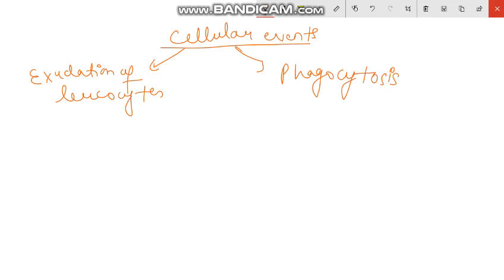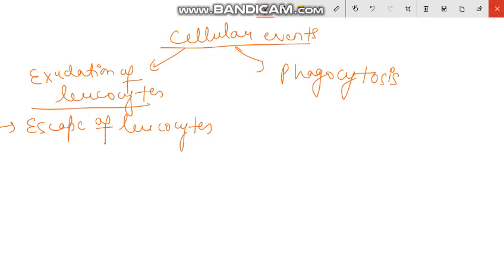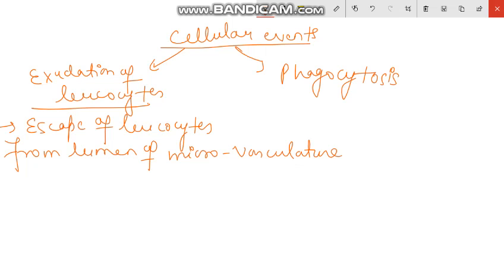So, exudation of leukocytes means the escape of leukocytes from the lumen of the microvasculature to the interstitial space.